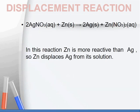Here you can see another example of displacement reaction. In this reaction, zinc is more reactive than silver. So zinc displaces silver from its solution.